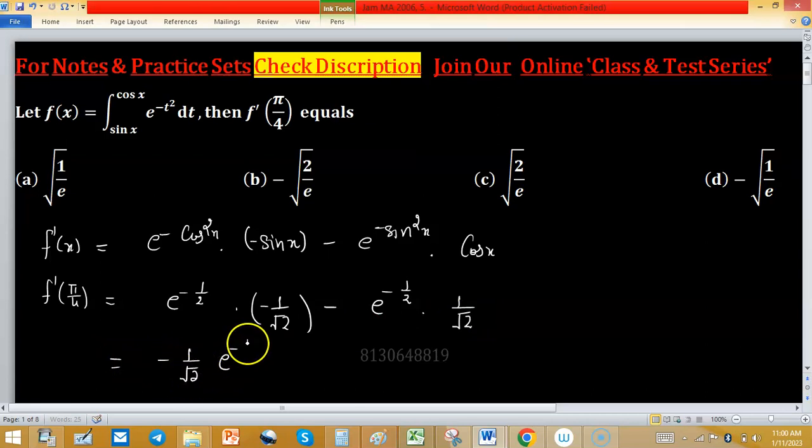minus 1/√2 times e^(-1/2). This one can be written as -2/√2 times e^(-1/2).